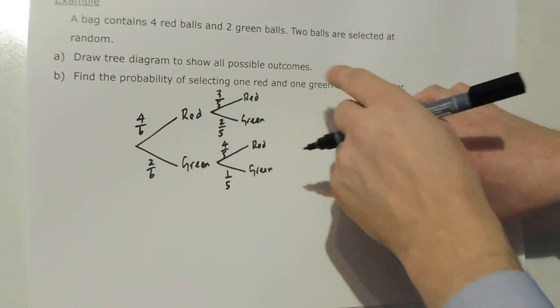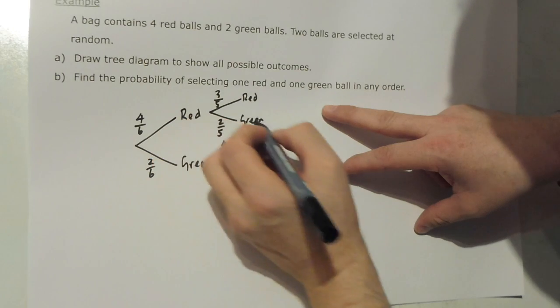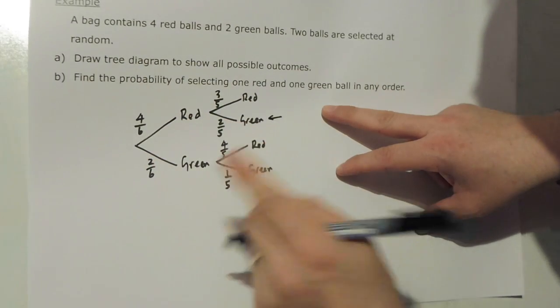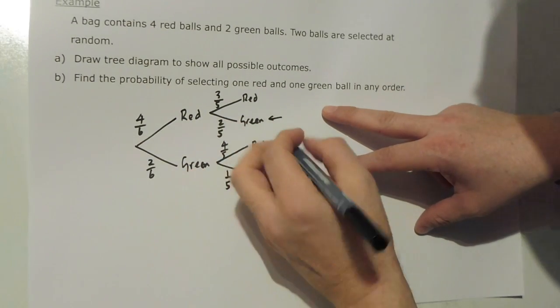The probability of selecting 1 green and 1 red. Well, 1 red, 1 green, that outcome. Or 1 green, 1 red, that outcome.